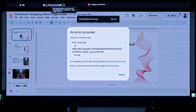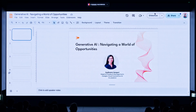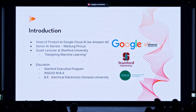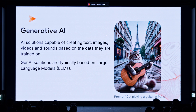I'm going to share some of my thoughts on generative AI and the world of opportunities that it presents. Here's a quick narrative of what I'm seeing in the market. Generative AI is AI solutions that are capable of creating text, videos, sounds, and images. We call these modalities. Across all of these modalities, AI can create text, images, video, and sounds based on the data that it is trained on.